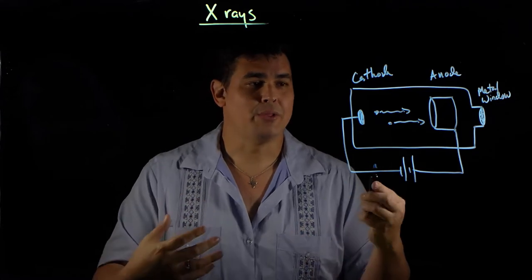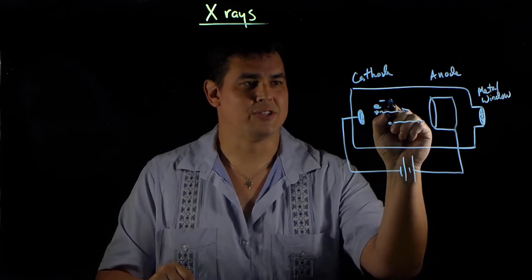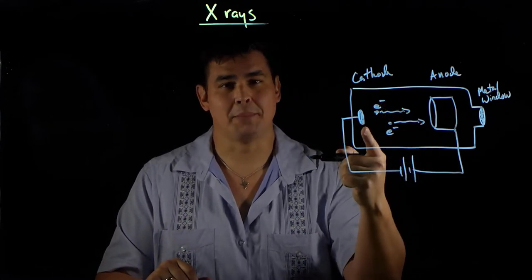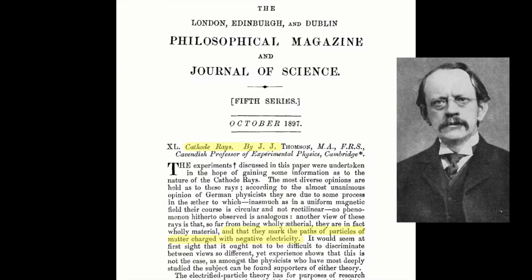So in reality, nowadays, we know that cathode rays are really electrons. So what was happening was electrons were being pulled off the anode, and J.J. Thompson figured this out in 1897.